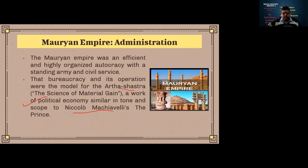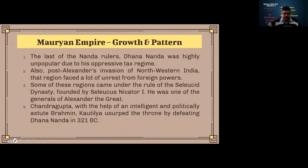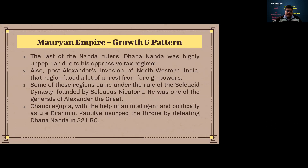Regarding the growth and origins of the empire: the last Nanda ruler, Dhanananda, was highly unpopular due to his oppressive tax regime. Because of this, the Nandas became unpopular and the masses were looking for change. This discontent was channeled through Chanakya, who used it to build momentum for the rise of the Maurya Empire.